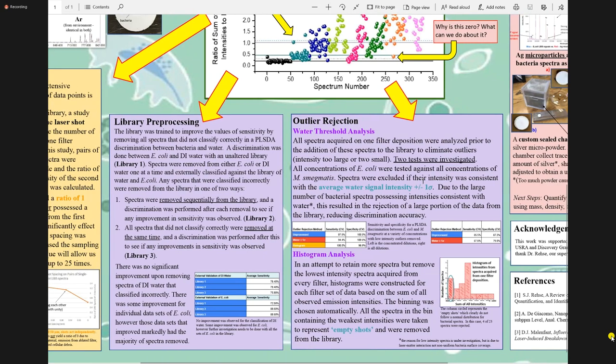So our first method was histogram analysis. We investigated rejecting data based on the weakest signals in each set of data. To do this we constructed a histogram for each filter as shown here and we analyzed that histogram and basically took out all the spectra that are represented by this lone bar at the bottom circled in green. This classification analysis, however did not improve the accuracy significantly. Next we investigated rejecting spectra based on its intensity compared to the controls in our case DI Waters average intensity plus or minus one standard deviation. This, however resulted in throwing out a majority of the bacterial spectra which made the discrimination a lot worse. The overall conclusion of this is that removing spectra shows some improvement but it has not solved our problem completely and we're still working on ways to improve our accuracy.